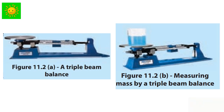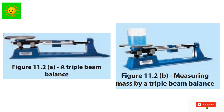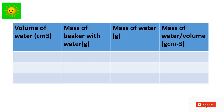Using the readings and calculations you obtain, you have to fill in a table. Note that one milliliter is equal to one cubic centimeter. First of all, find out the mass of the empty beaker. This is the table in which you have to enter your calculations.